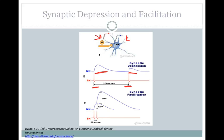Synaptic depression can be due to a number of factors, but one common reason would be that you do not have as much neurotransmitter ready to be released — so maybe all of your active sites are not docked with vesicles.